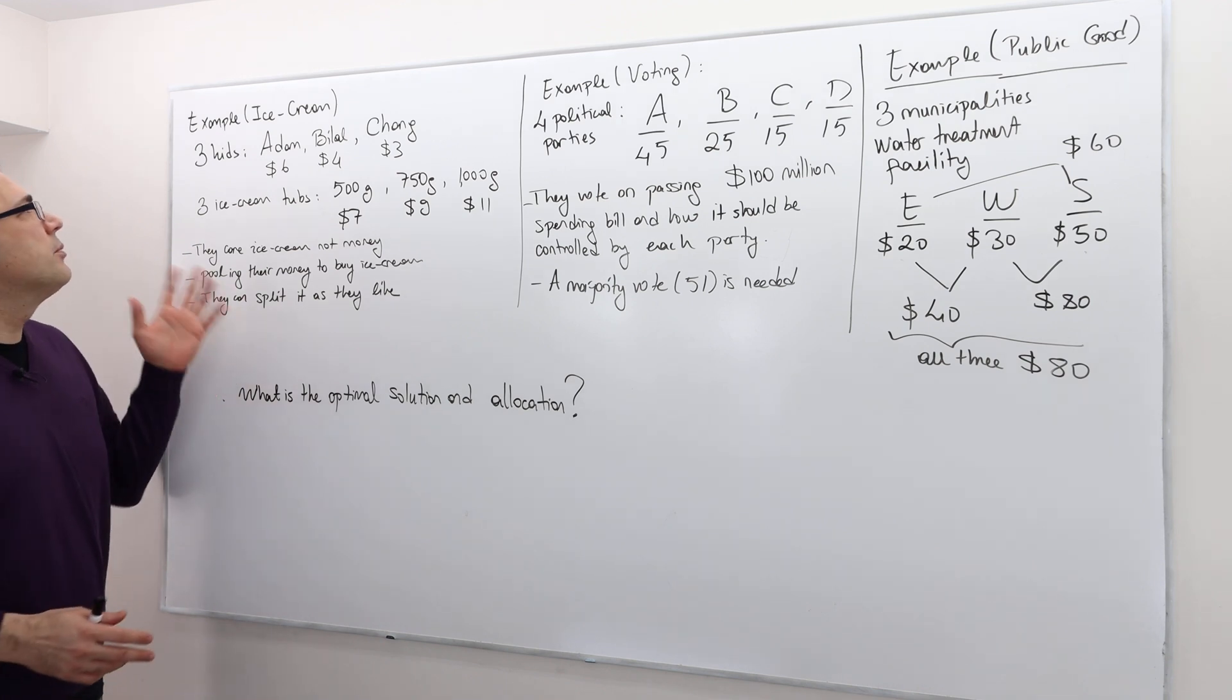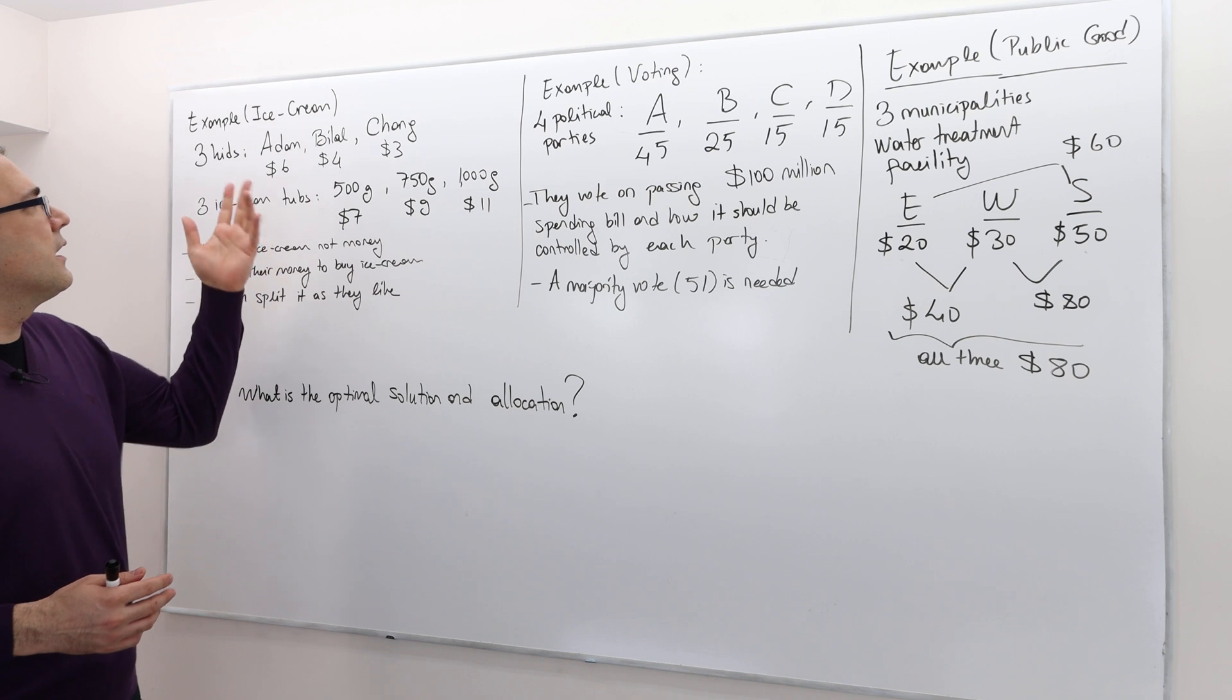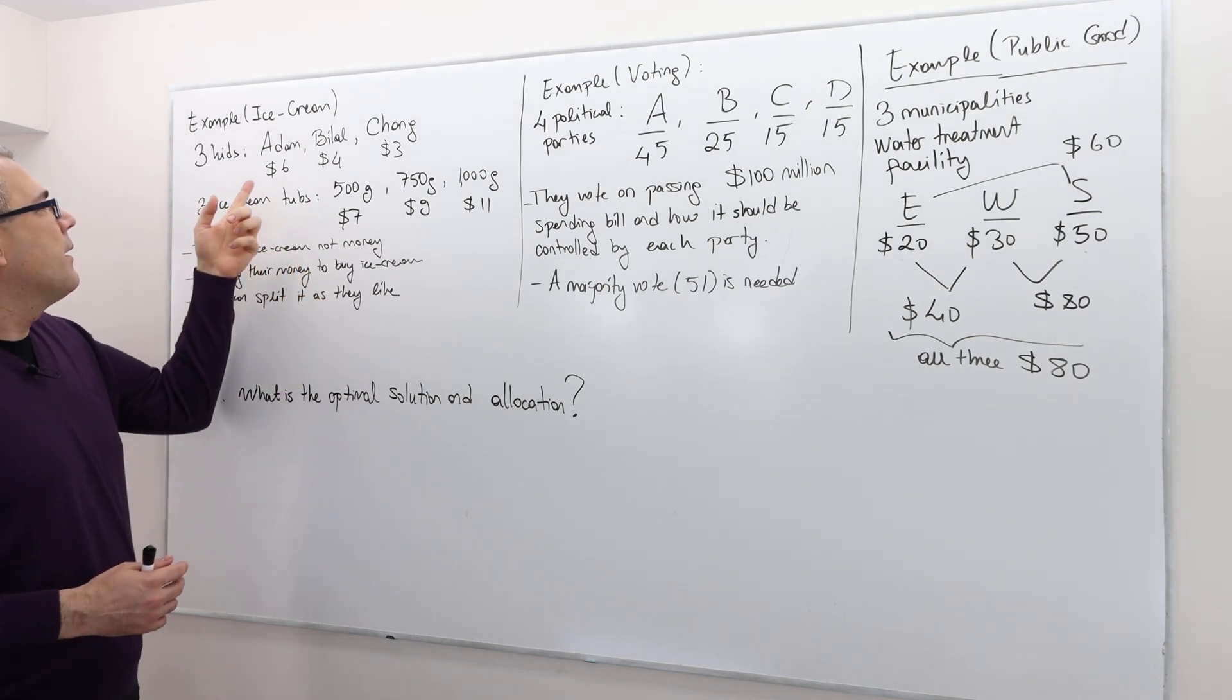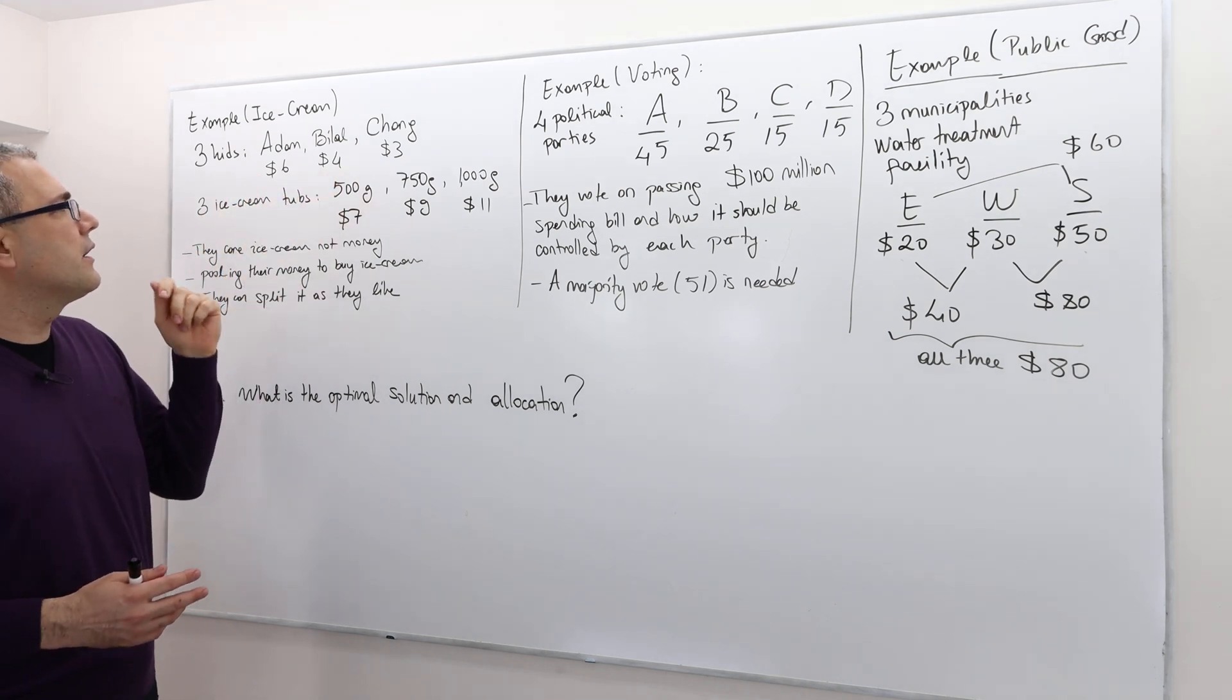My favorite example is the ice cream example. There are three kids - I call them Adam, Bilal, and Chang, or ABC. Adam has six dollars, Bilal has four dollars, and Chang has three dollars.